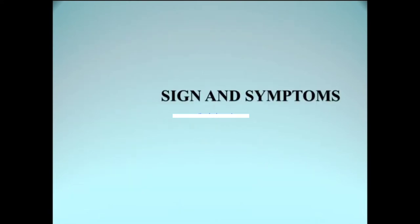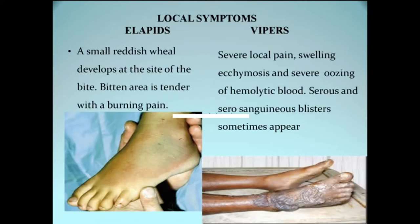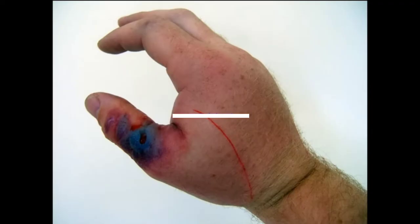We'll now cover signs and symptoms of snake poisoning. Depending on the family, symptoms differ. For local symptoms at the bite site: Elapids cause swelling and small reddish wheals, with pain, tenderness, and a burning sensation. For Vipers, there is severe pain, swelling, and blistering of the skin due to oozing of hemolytic blood — you will see serous or serosanguinous blisters. Swelling occurs in both cases but blistering is more typical of viper bites.